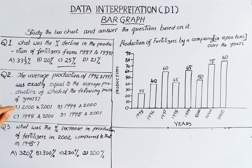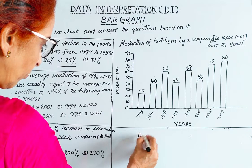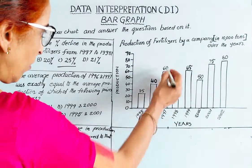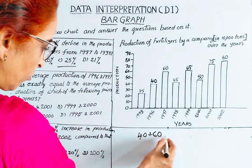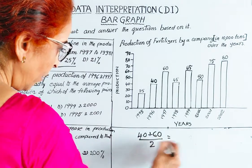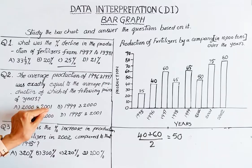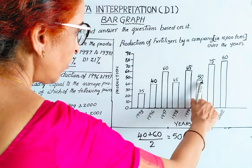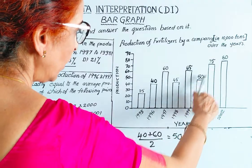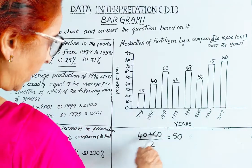First, the average of 1996 and 1997: 1996 is 40, 1997 is 60. Sum is 100, divided by 2 is 50. That average is 50. Checking 2000 and 2001: 2000 is 50, 2001 is 75. Sum is 125, divided by 2 is 62.5 — not equal to 50.